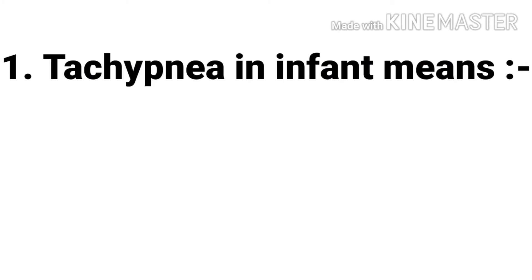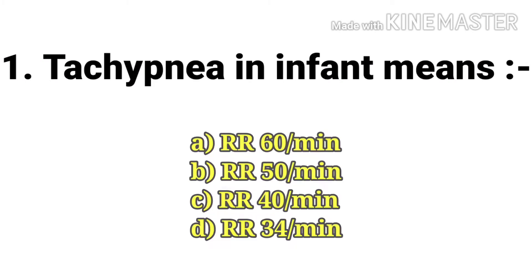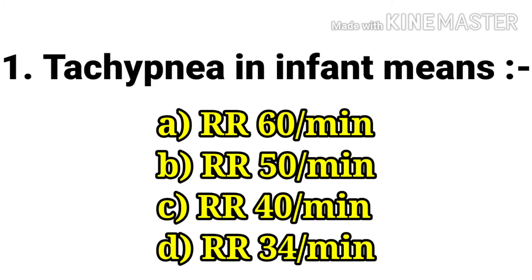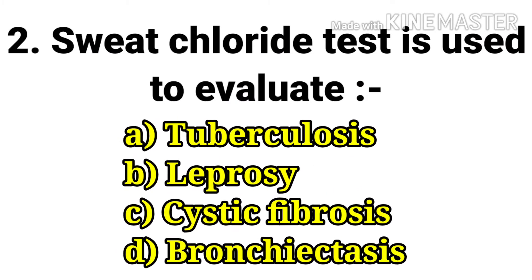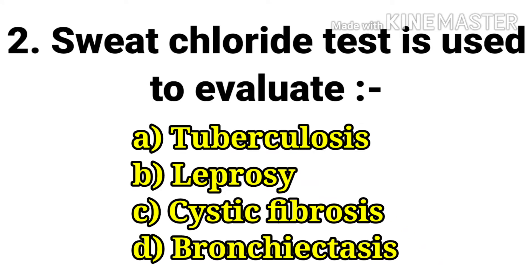The first question: tachypnea in an infant means — options are respiratory rate 60 per minute, respiratory rate 50 per minute, respiratory rate 40 per minute, respiratory rate 34 per minute. The answer is respiratory rate 60 per minute.